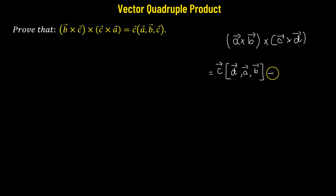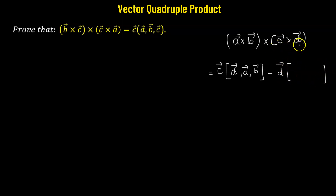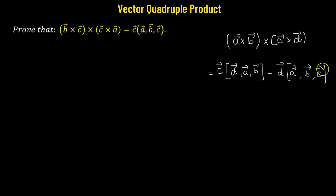Next, minus: we consider the fourth vector, which is vector d, and this is multiplied by the scalar triple product between the remaining three vectors. Coming back to the beginning, we have vector a followed by vector b, then vector c. This is how we express the vector product of four vectors in this particular fashion.